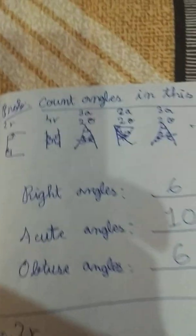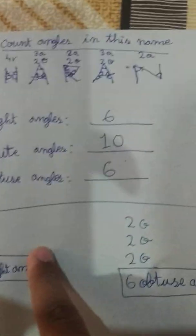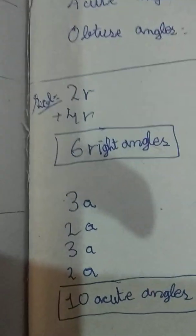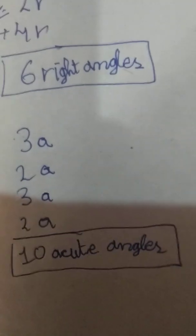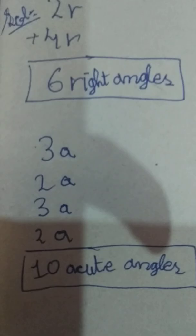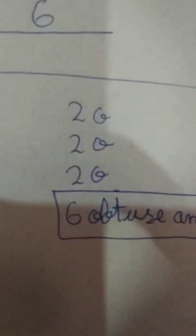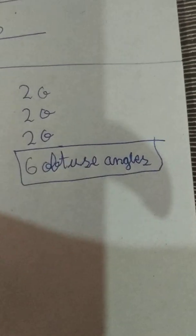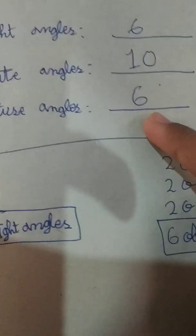And now we will see the N alphabet — only two acute angles. One is here, one acute angle, and here two acute angles. Now for the total solution: right angles — first two R, and the other four R, so four plus two right angles is six right angles. And acute angles: three plus two plus three plus two — ten acute angles. And obtuse angles: two plus two plus two is six obtuse angles. So right angles: six; acute angle: ten; obtuse angle: six.